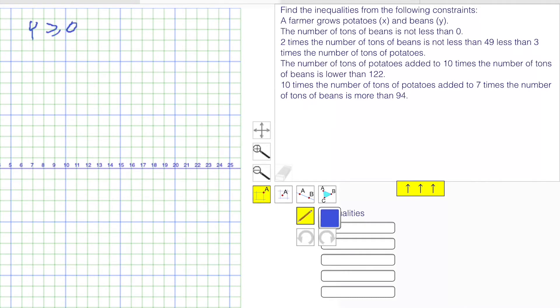The next one: 2 times the number of tons of beans, that's 2y, is not less than—that means greater than or equal to—49 less than 3 times the number of potatoes, 3x. 49 less is minus 49. And then if I divide everything by 2 to get y alone, y is greater than 3 over 2x minus 49 over 2. Let's write that in here.